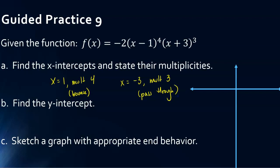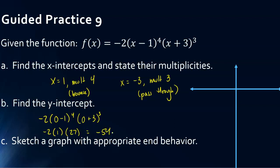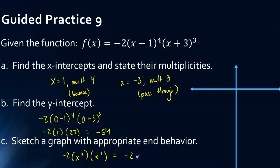The y-intercept: replace x with 0. Negative 1 to the 4th power is positive 1, and 3 cubed is positive 27. If you multiply those together — don't forget the negative 2 out front — we get a y-intercept of negative 54. For end behavior, we have x to the 4th times x cubed, which gives us negative 2x to the 7th.